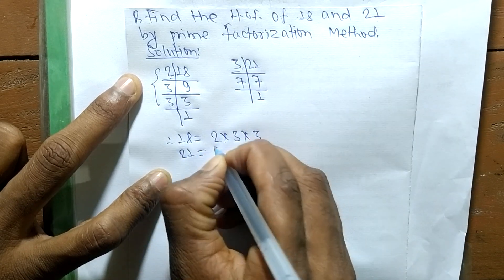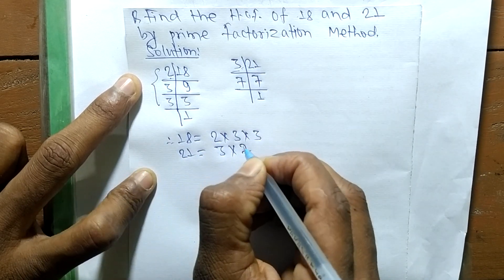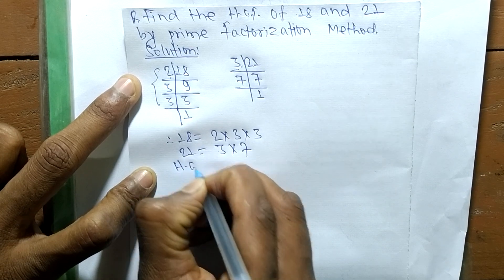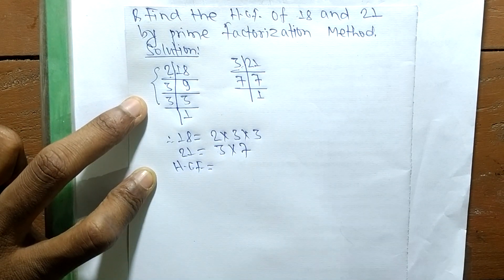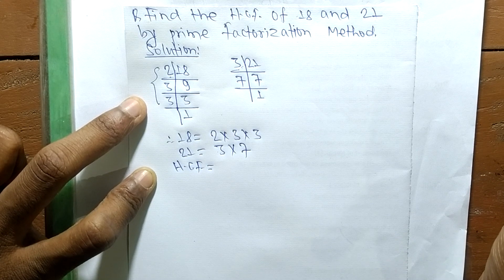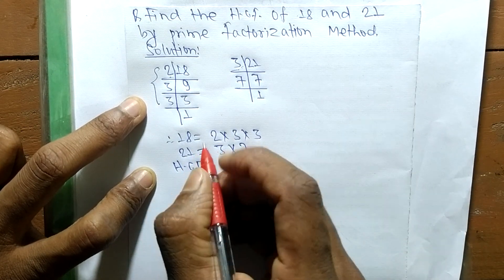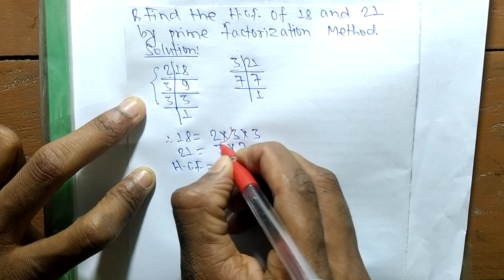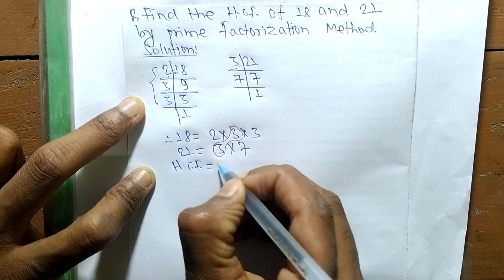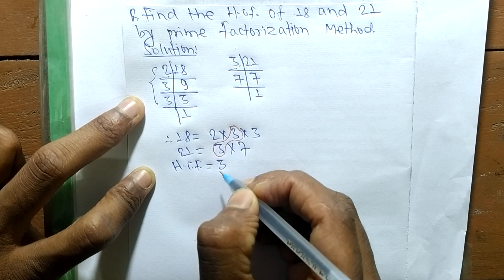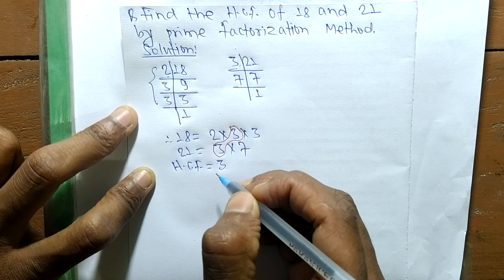For 21, it is 3 times 7. So its HCF is equal to... now we have to find out the common factors in the prime factors of 18 and 21. So the common factor here is only 3, so its HCF is equal to 3. So this much for today and thanks for watching.